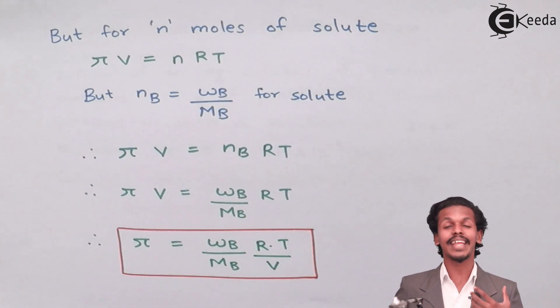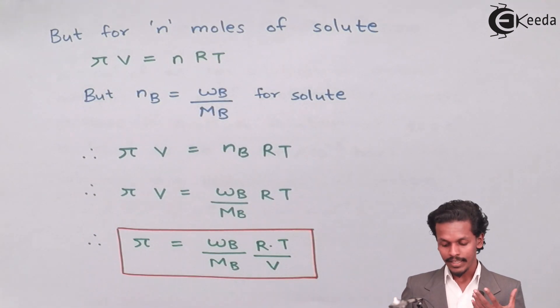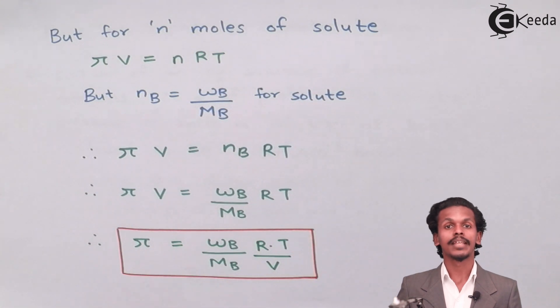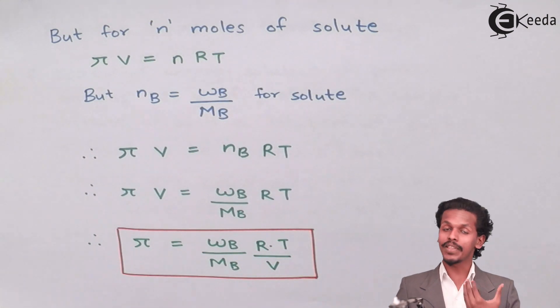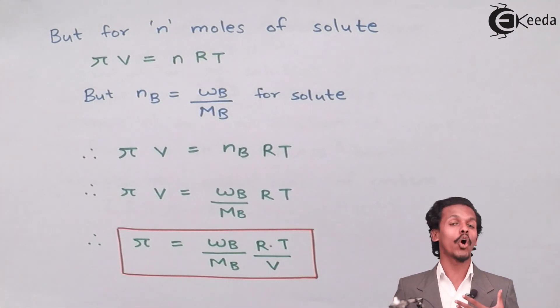V stands for volume of the solution in dm³, temperature should be in Kelvin, and the weight and molecular weight should be in kg and kg per mole respectively. By help of this we can calculate osmotic pressure.